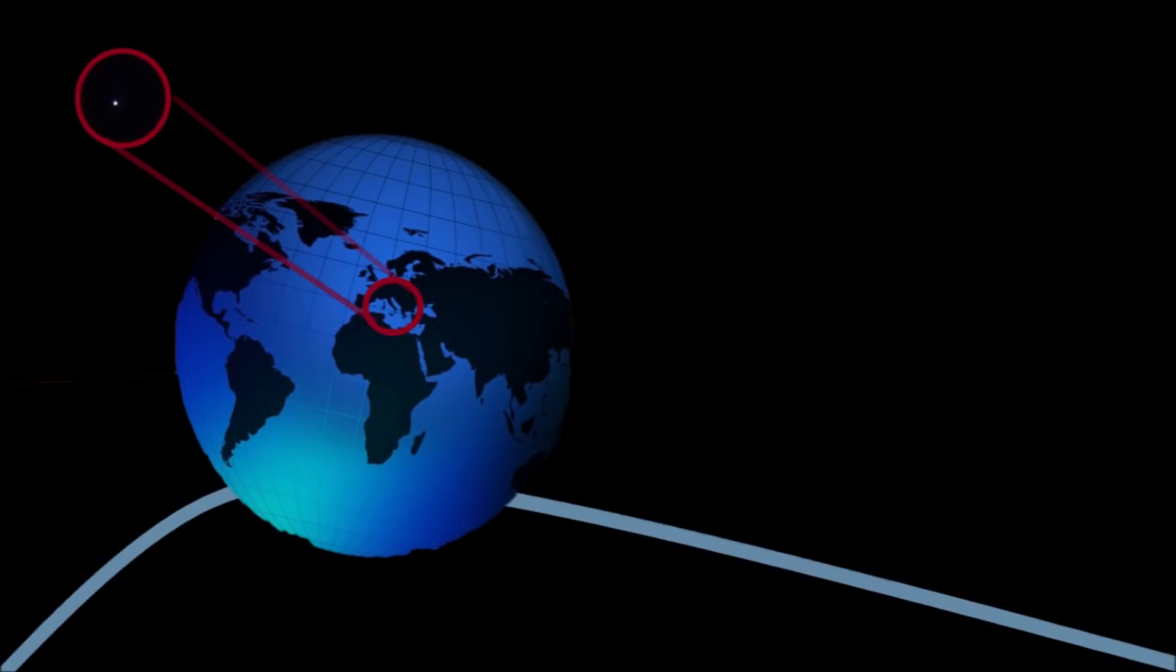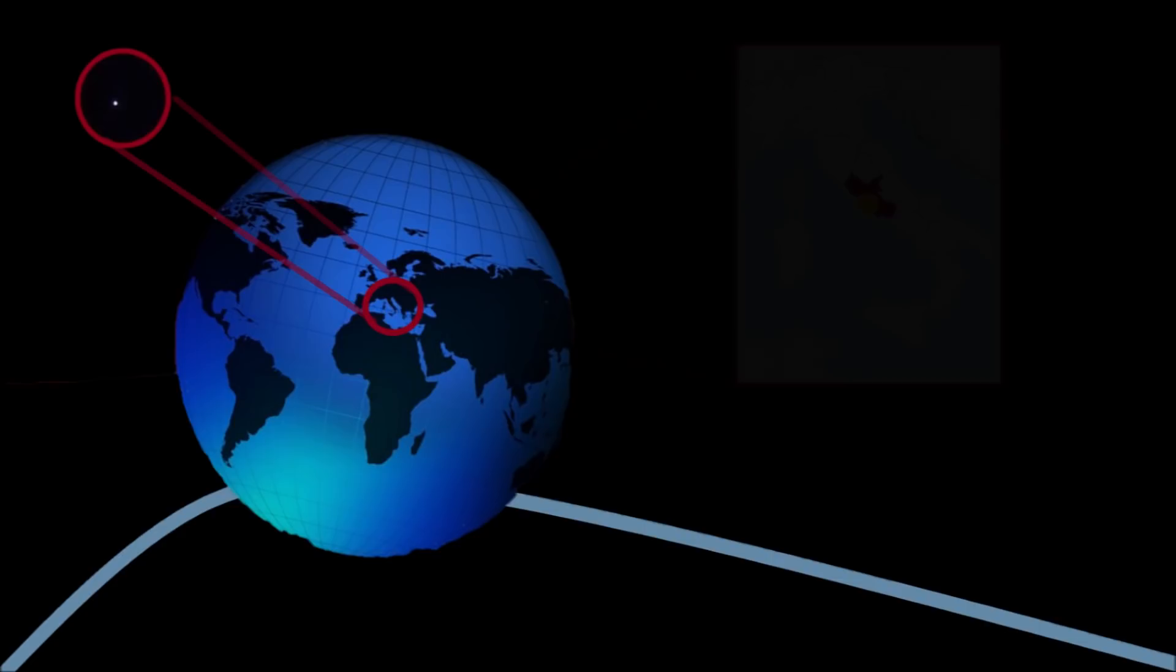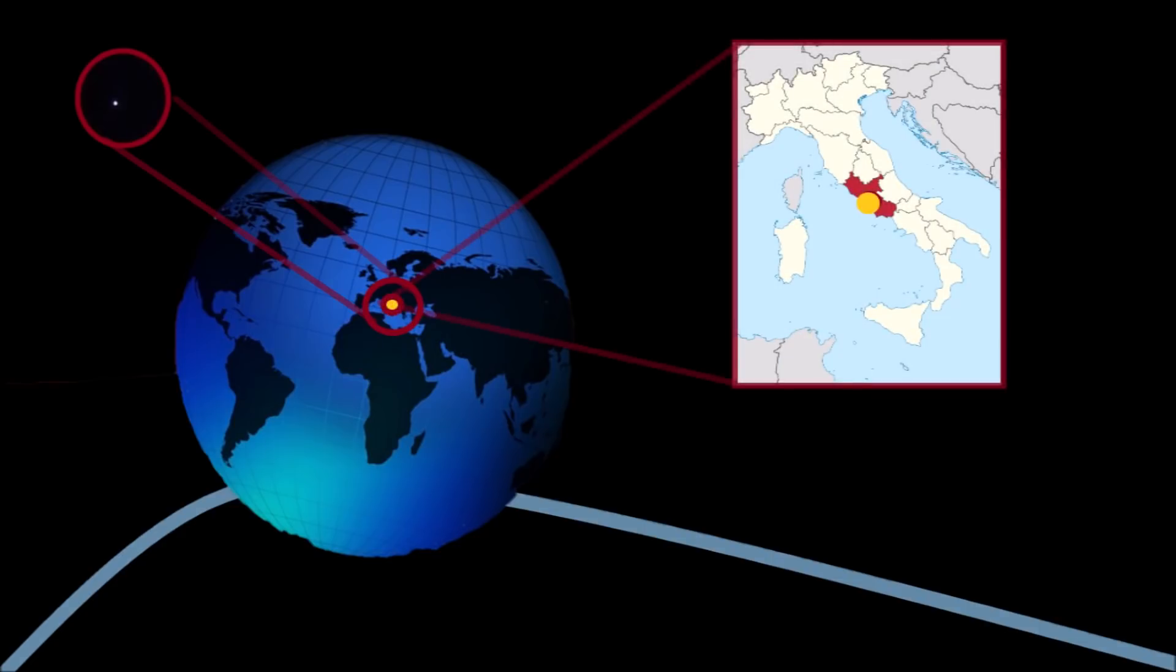On November the 6th, a huge meteorite was spotted in the sky over the city of Rome. Spectacular video images were captured over central Italy's territories, showing the unique phenomenon.